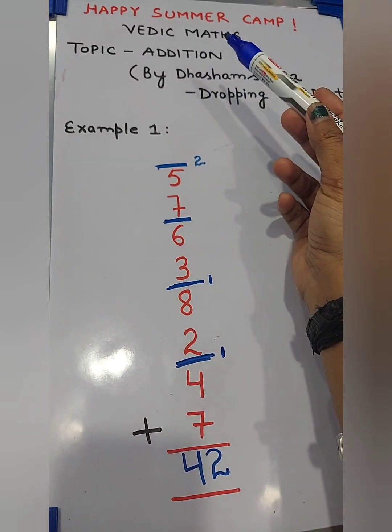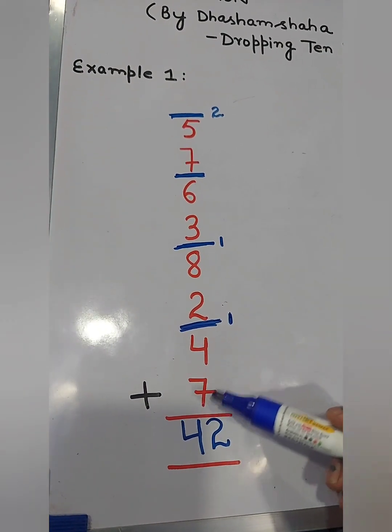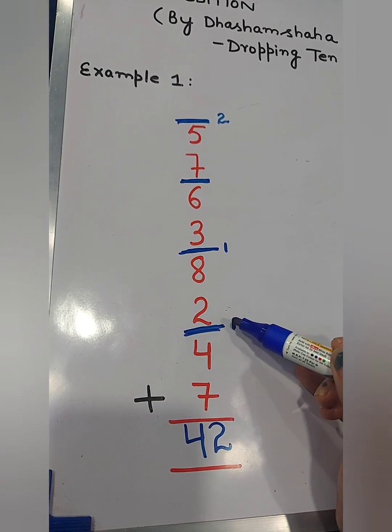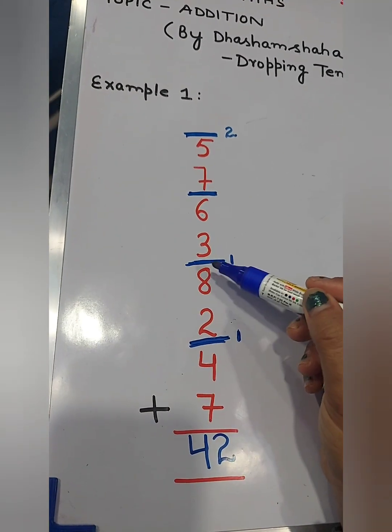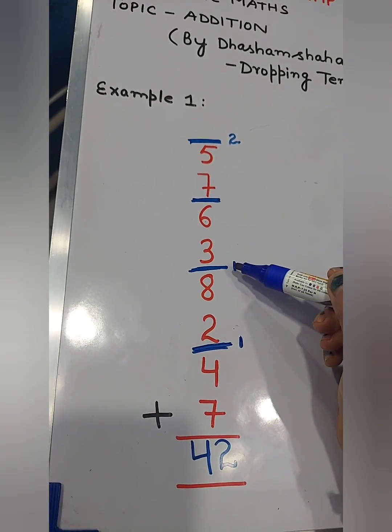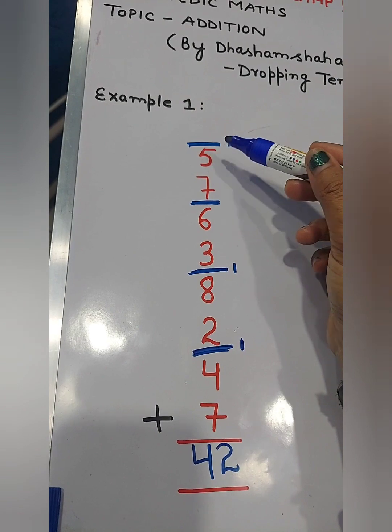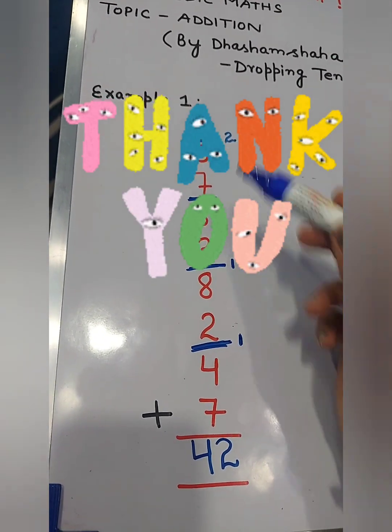How to add these numbers in Vedic Mathematics class? Start from here. Let's revise again. 7 plus 4, 11. Drop 10. We get 1, 1 carry. Plus 2, 3. 3 plus 8, 11. 11 में से 10 drop किया, 1. And 1 plus 3, 4. 4 plus 6, 10. Drop here. 7 plus 5, 12. And 12 में से 10 drop किया, 2. Count: 1, 2, 3, 4 times.